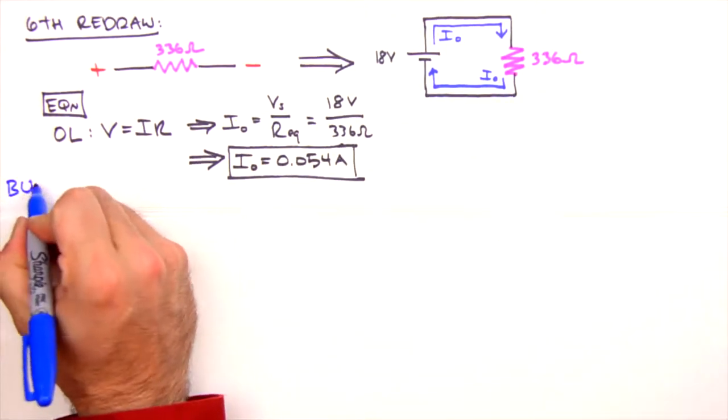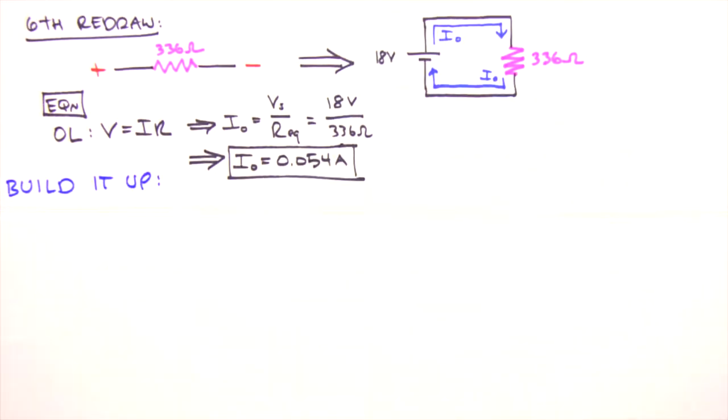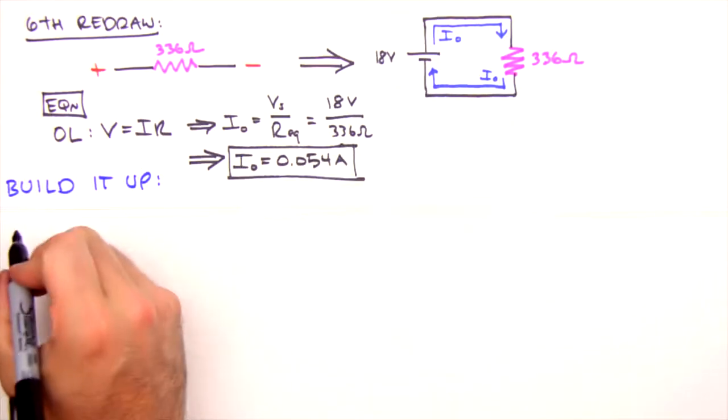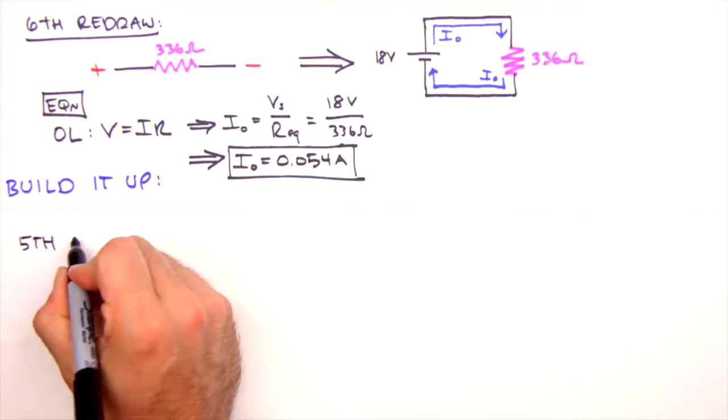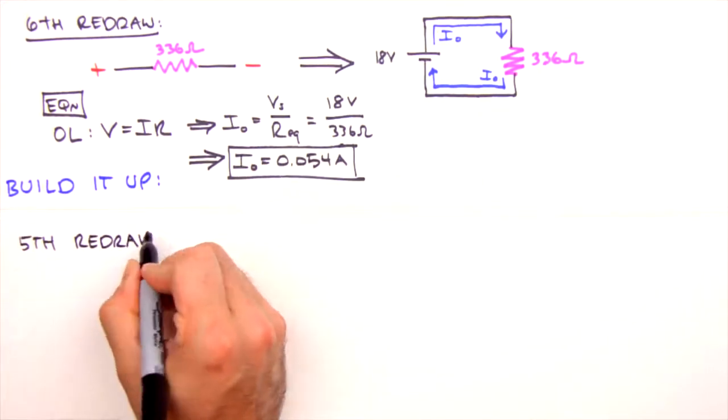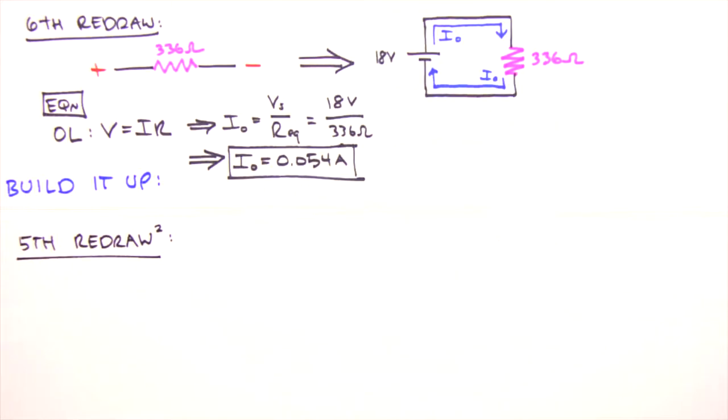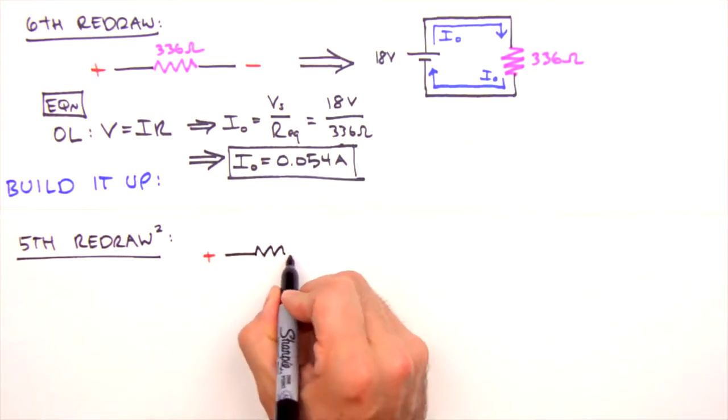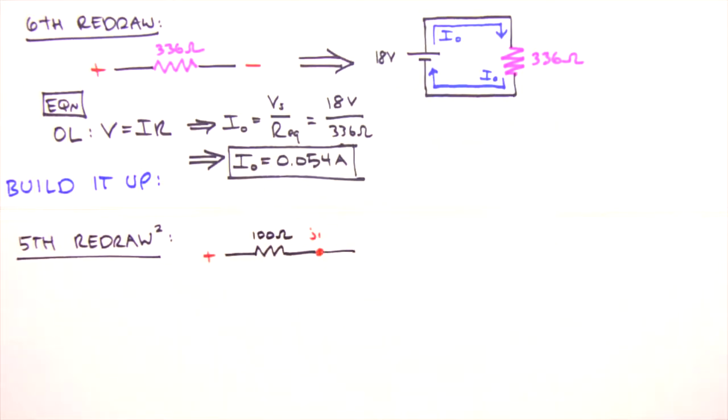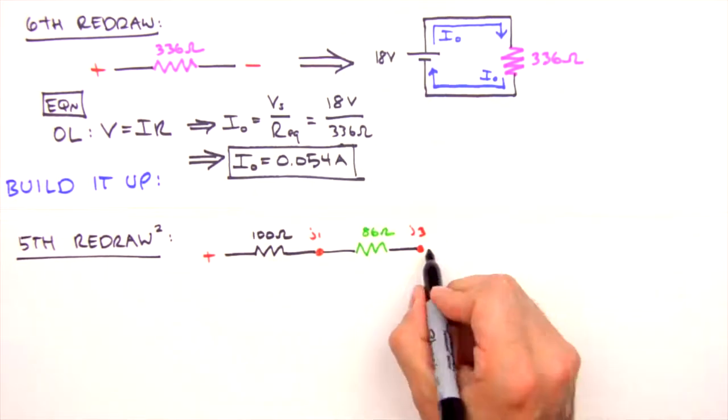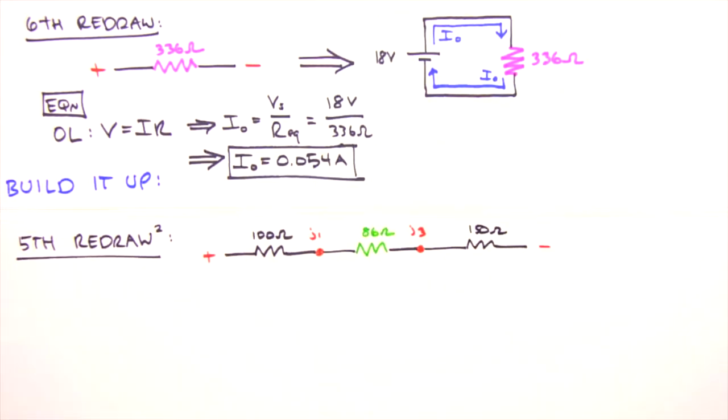To build our circuit back up to its original configuration, we'll move through our series of redraws in retrograde, determining the values for voltage across and current through each resistor as we go. So, we begin building it up by revisiting our fifth redraw. By the way, I'm redrawing my redraws here, hence the little two, for the sake of neatness. But to save on time and paper at home, just simply mark up your old redraws.